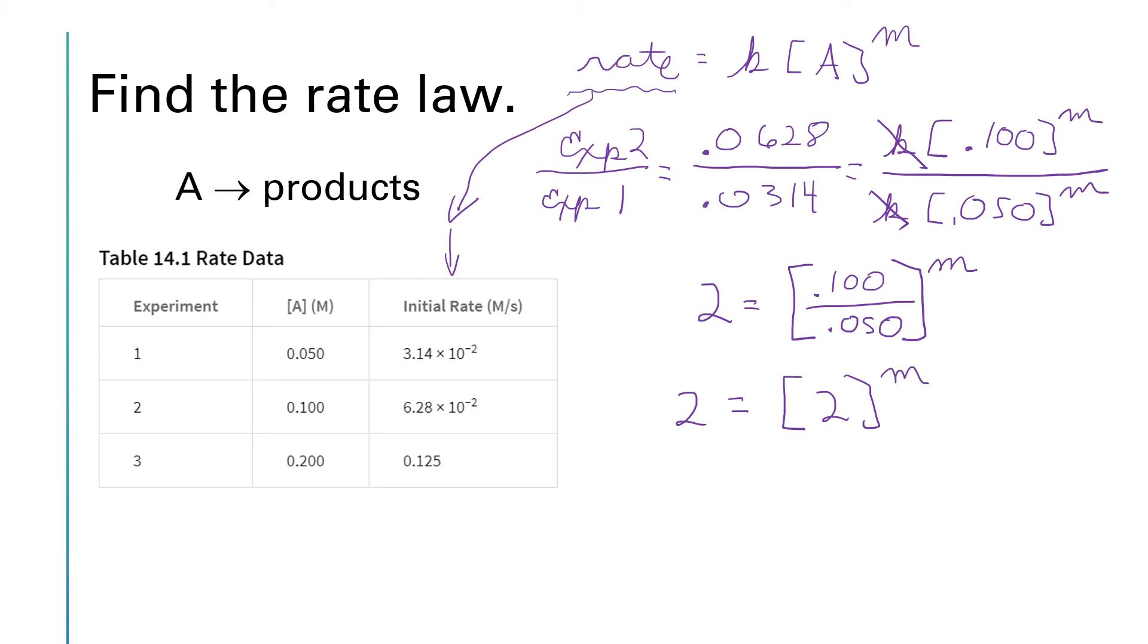0.1 divided by 0.05 is 2. So we're looking for the exponent that will make this equation true. And the power that we need here is one, because two to the first is equal to two. And so m will be equal to one.